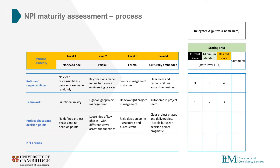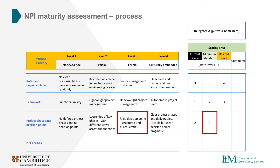Moving on to project phases and decision points: in our company, we generally have a loose idea of project phases, but exactly what these phases are often varies across teams. As such, we would score this category a two. We've had some real issues where untimely and fractured decision making has led to increased project costs, and so we think that we're probably currently below the required minimum standard here. With this in mind, we score the minimum standard as a three. We can really see the value in having clearer project phases and deliverables, and so we score our desired level as a four.